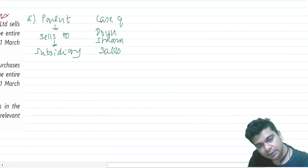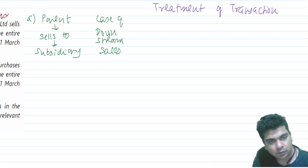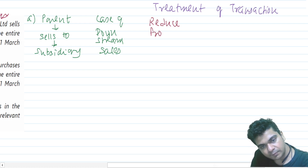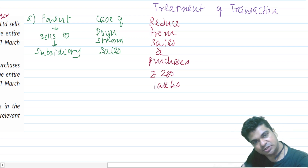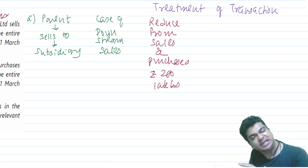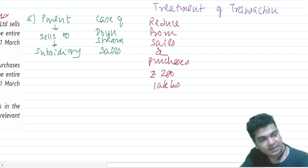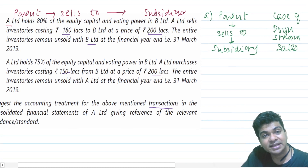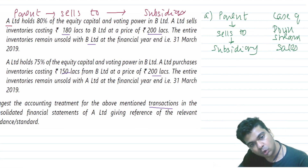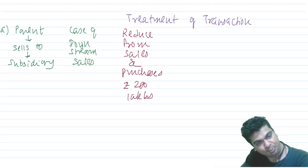What shall be the treatment of this transaction? We reduce from sales and purchases. Rupees 200 lakhs — this must be lying in the sales of the parent and in the purchases of the subsidiary. So reduce the sales by 200 lakhs and reduce the purchases by 200 lakhs. One more thing: 180 lakhs cost sold for 200 lakhs means there is a profit. This profit is unrealized to the extent of unsold goods. Since the entire inventory is unsold, the entire profit of 20 lakhs is unrealized, so we have to eliminate the unrealized profit.